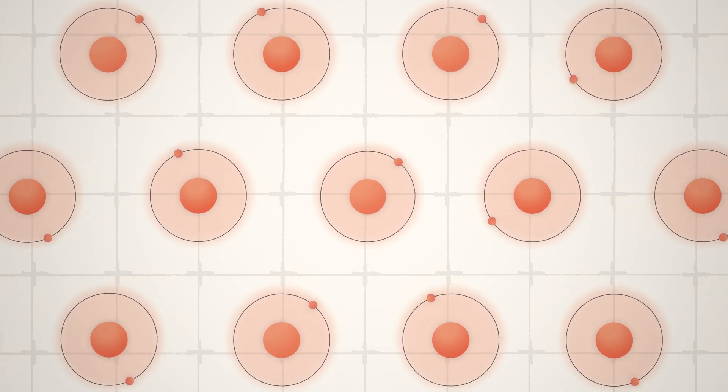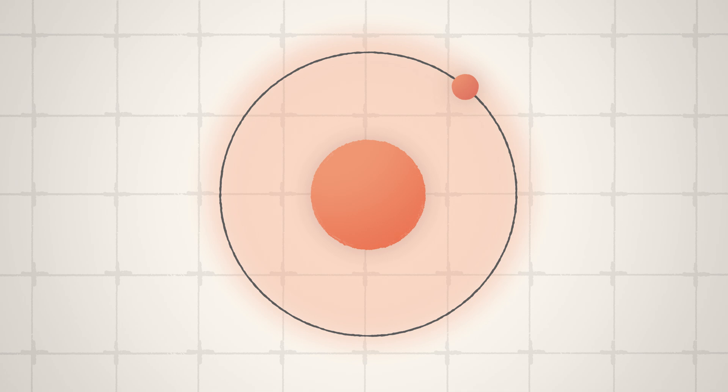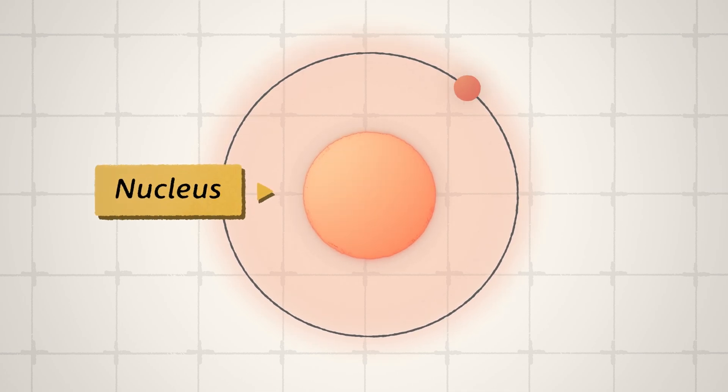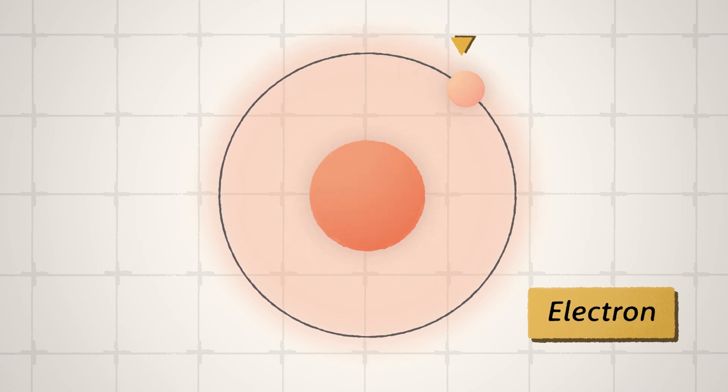To understand how this works, let's look inside the atom. Every atom has a nucleus surrounded by one or more particles called electrons. We can use light to turn these simple parts into an atomic clock that keeps almost perfect time.